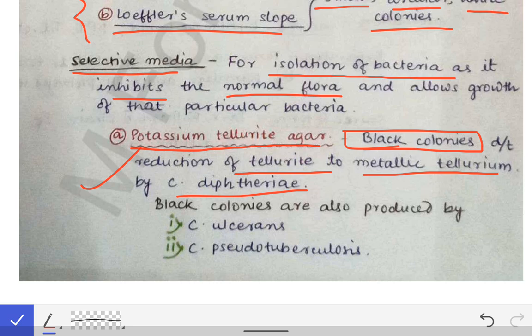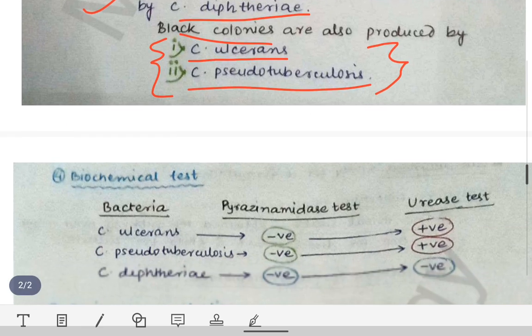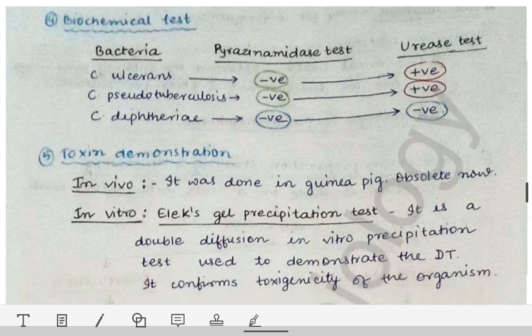There are exceptions: black colonies on potassium tellurite agar are not produced only by Corynebacterium diphtheriae. Corynebacterium ulcerans and Corynebacterium pseudotuberculosis also produce black colonies on this agar. Importantly, these are also the only other diphtheroids capable of producing the diphtheria toxin, making them significant organisms that must be differentiated from Corynebacterium diphtheriae.